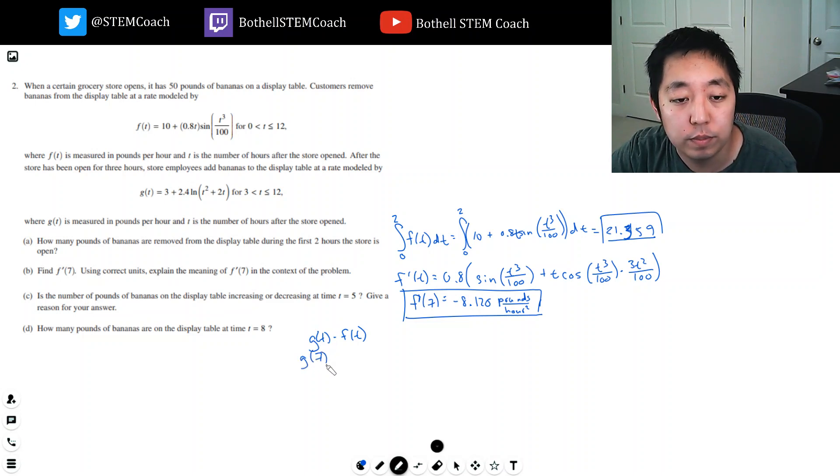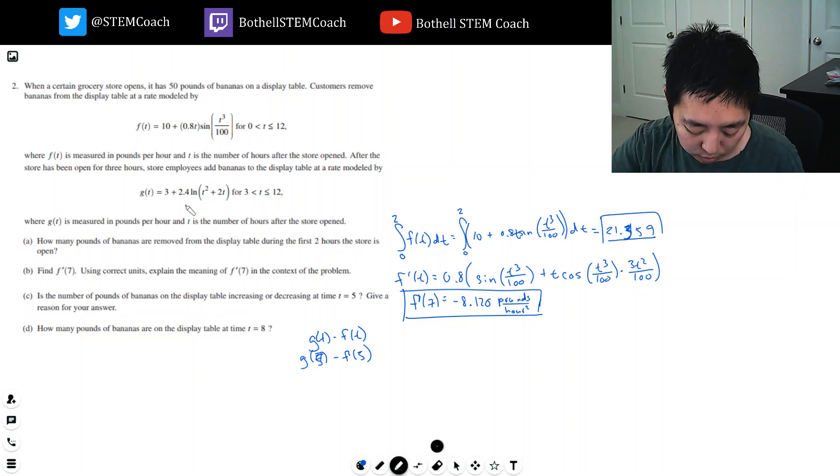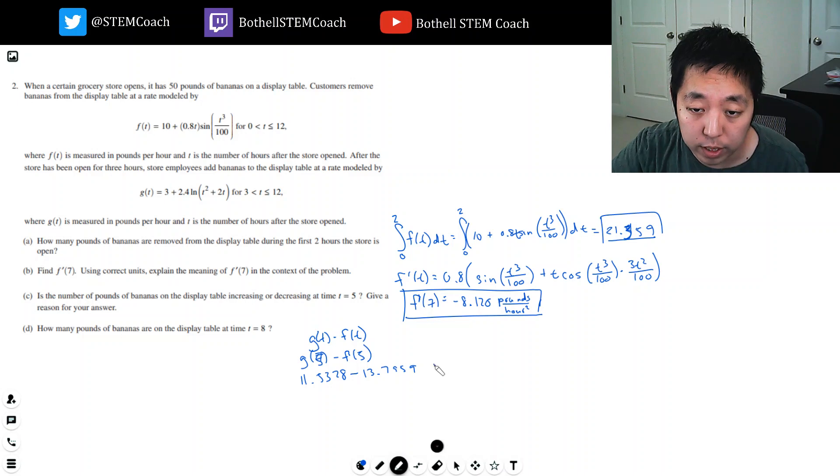We want to compute g(5) minus f(5) and decide which one is bigger. So g(5) equals 3 plus 2.4 natural log of 5 squared, 25 plus 35. This is 11.5328. And then f(5), I do 10 plus 0.8 times 5 times sine of 5 cubed divided by 100. I get this is 13.7959. Because this is less than 0, or in other words f is bigger, we're taking away bananas. So we're decreasing.